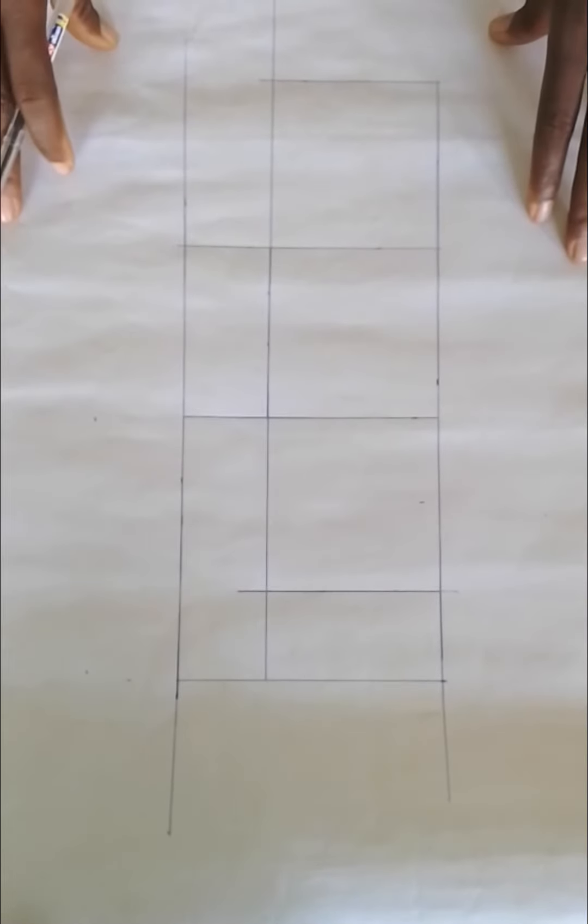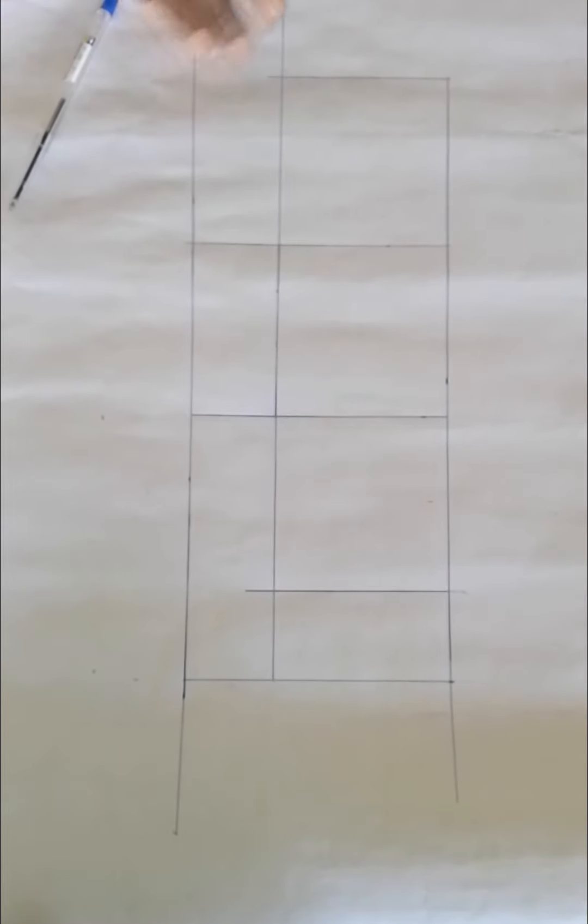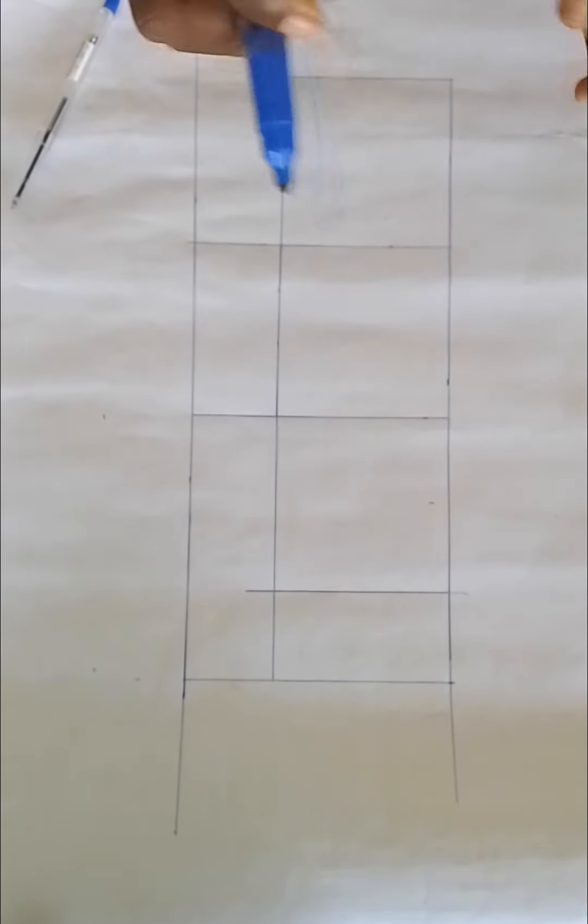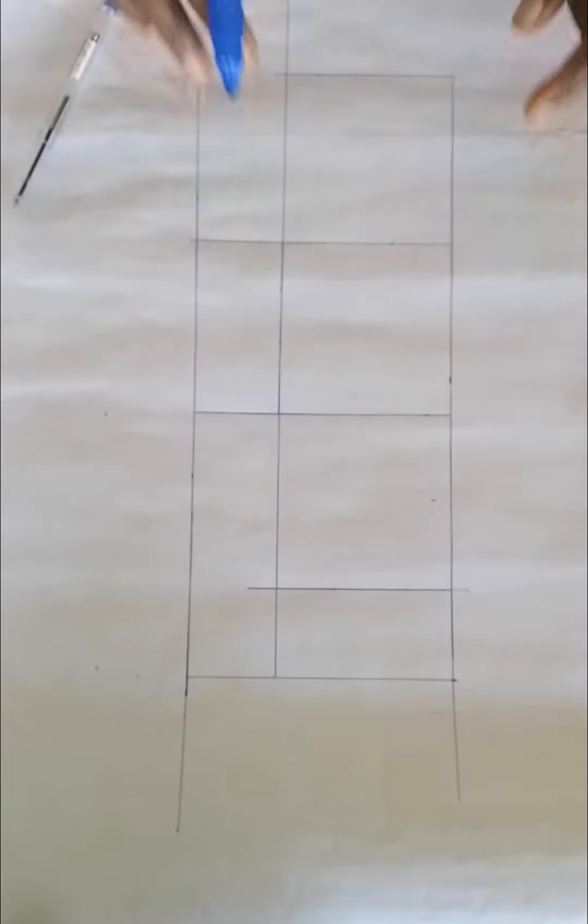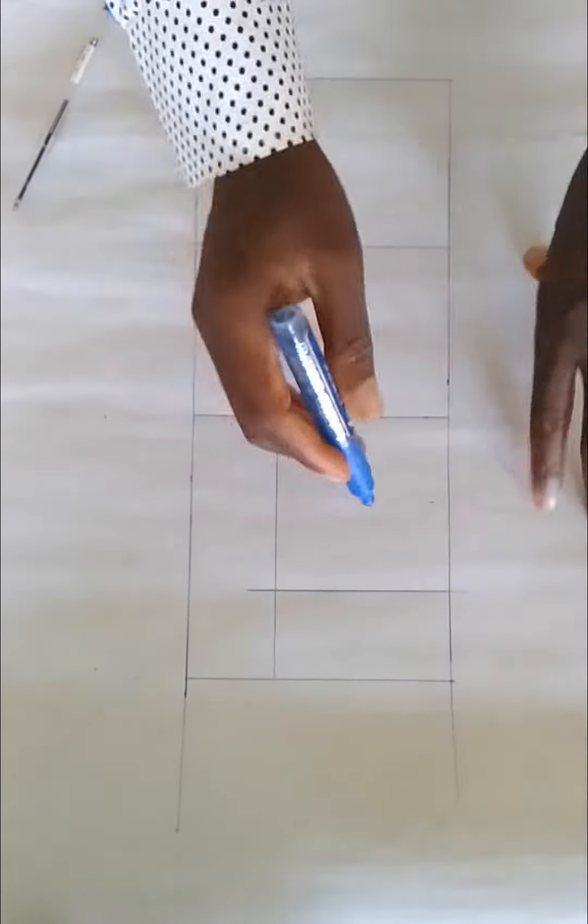Welcome to this practical class. As you can see in the previous video, we showed you the net of a square base prism. Now we want to construct it using this cardboard. Like I said, a prism is a three-dimensional shape that has two identical shapes facing one another.